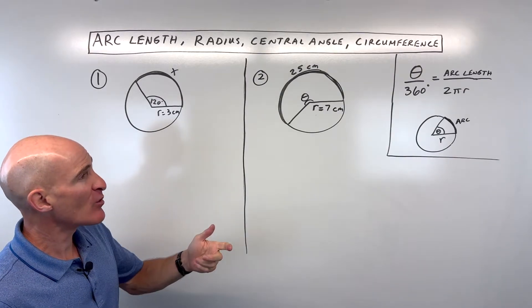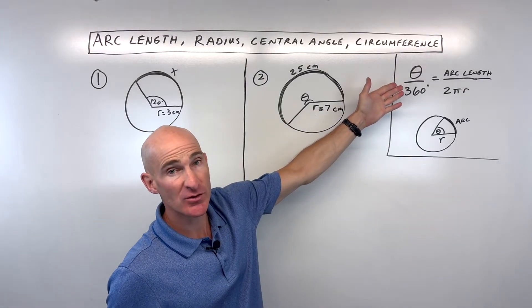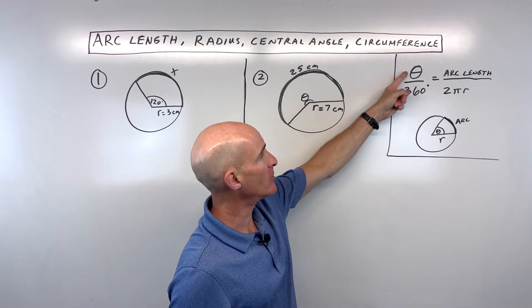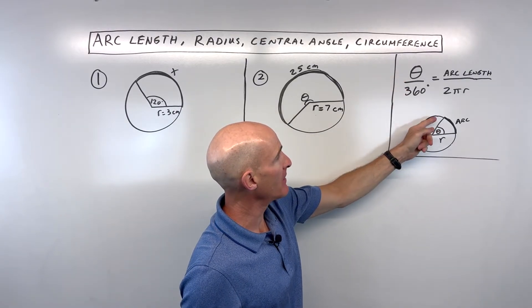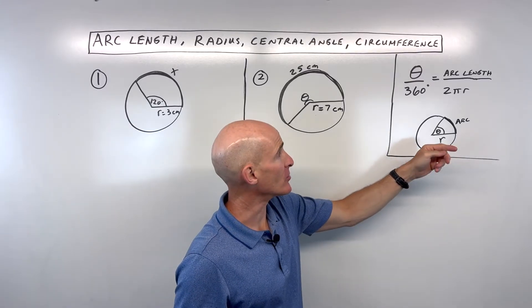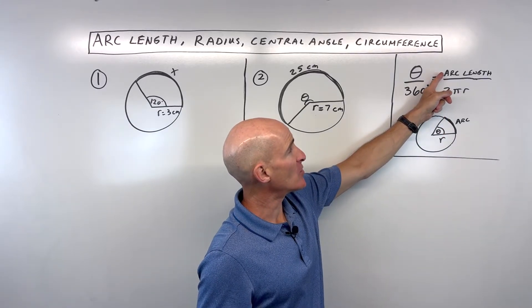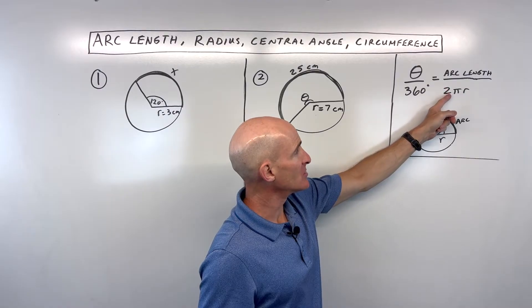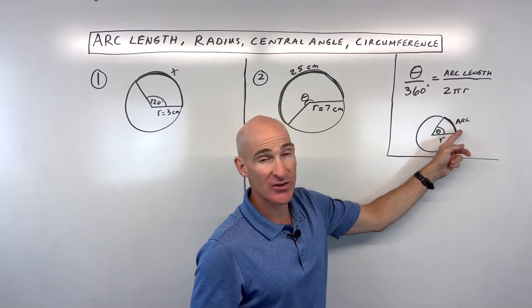The first thing we want to know is this formula, or this relationship right here, that the ratio of the central angle theta divided by 360, which represents all the way around the circle, is the same ratio as the arc length is to the 2πr, which represents the whole circumference.